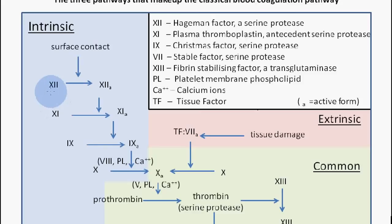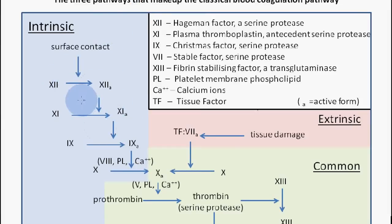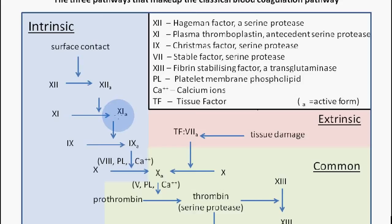We have factor 12 which gets converted into factor 12a, following contact of plasmin, which is a plasma protein that comes into contact with a negative surface — such as the exposed collagen of the subendothelium — and then it initiates the conversion of factor 12 into factor 12a. Once we have factor 12a formed, it enables factor 11 to be converted into factor 11a.